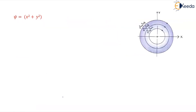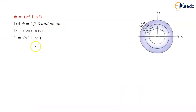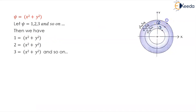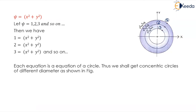The function was psi equals x squared plus y squared. Let psi be 1, 2, and 3 and so on. For psi equals 1, we get x squared plus y squared equals 1, and so on for the second and third circles. Each equation is the equation of a circle. Thus we get concentric circles of different diameters, as shown in this particular figure.